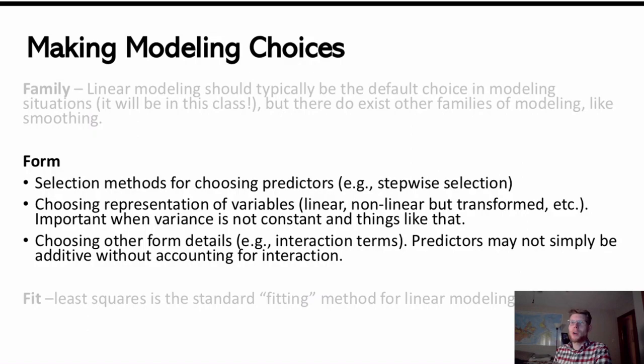So just a summary. Family is something that we default on in this class. We're doing linear modeling, using a parametric approach. We've already discussed the fit issue. Least squares is our method going forward. So form is really the thing that we're going to be focusing on a lot more as something that we take a lot more choice in, especially in this course. That's going to be coming up in some of these next videos.